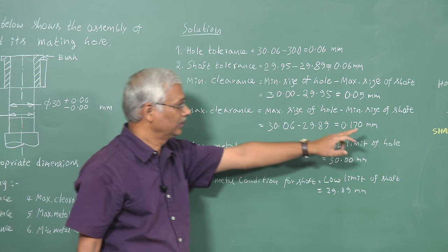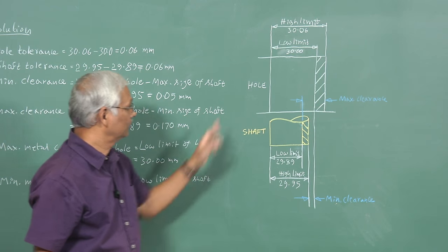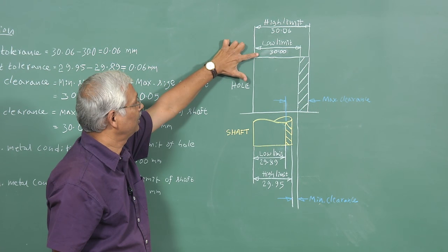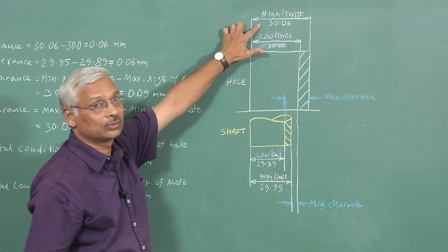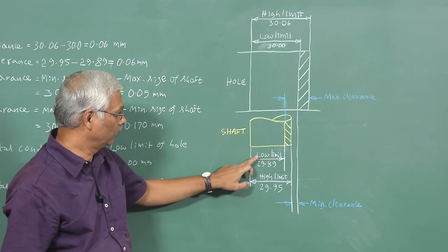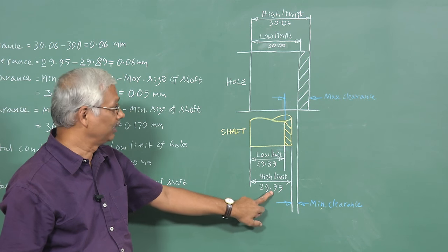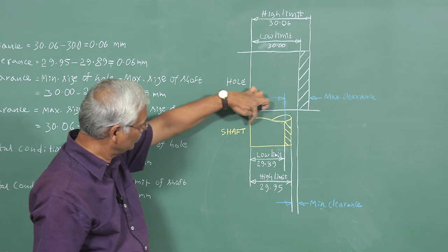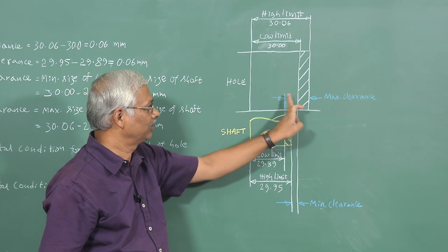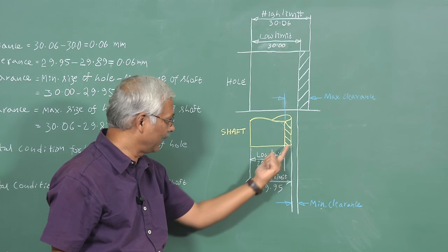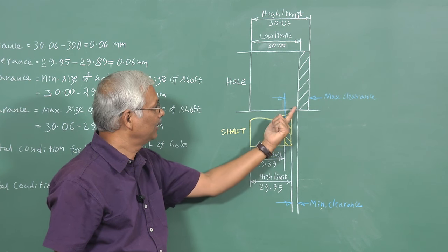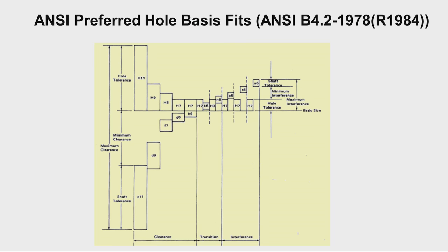All these values are shown in the picture. The hole has a lower limit of 30mm and upper limit of 30.06mm. The shaft has a lower limit of 29.89mm and upper limit of 29.95mm. Here, some preferred hole basis fits are shown as per American Standard ANSI B4.2.